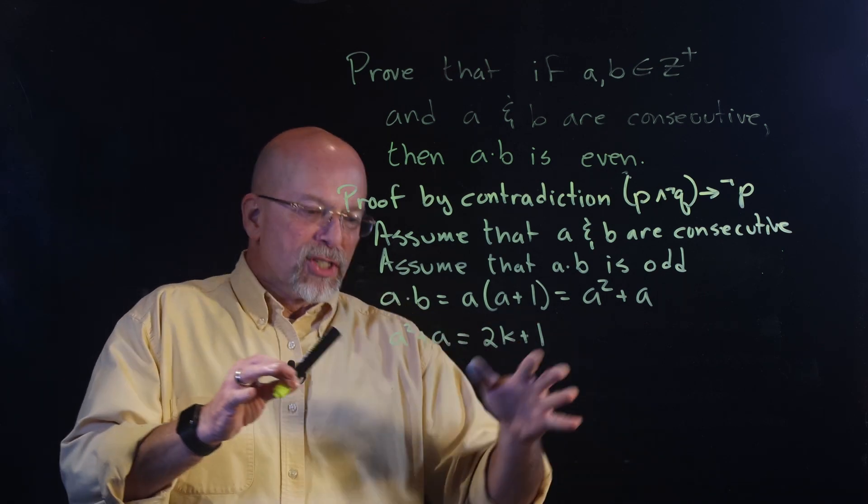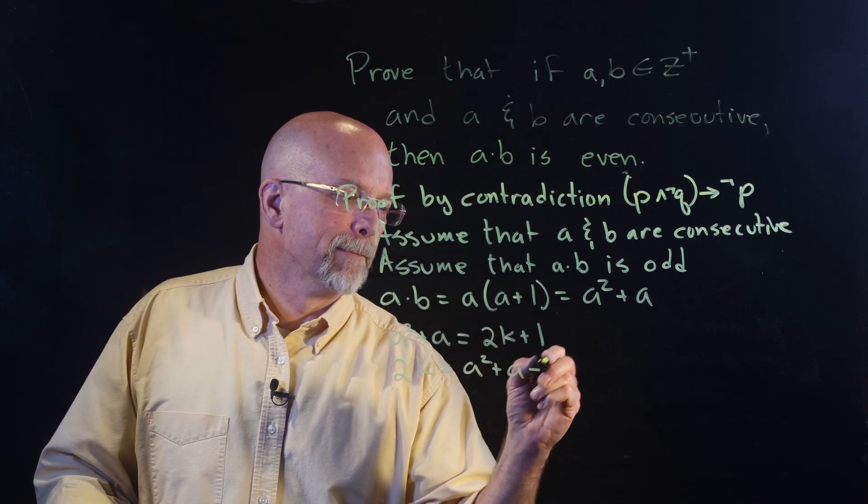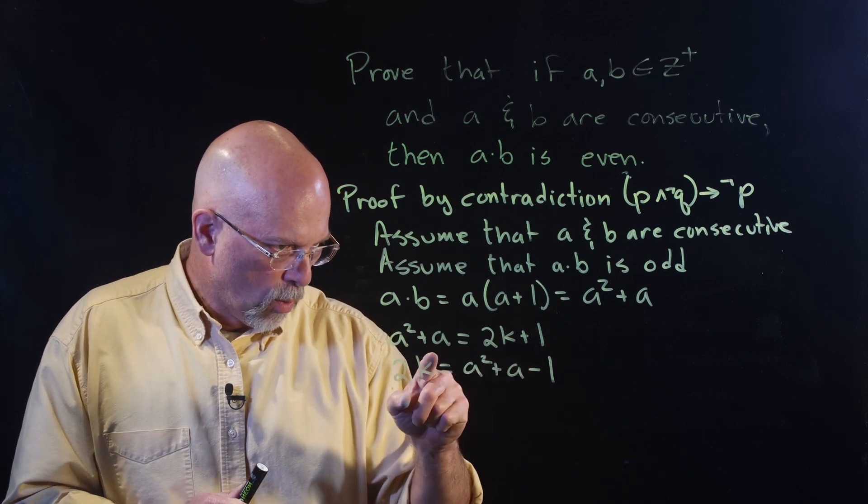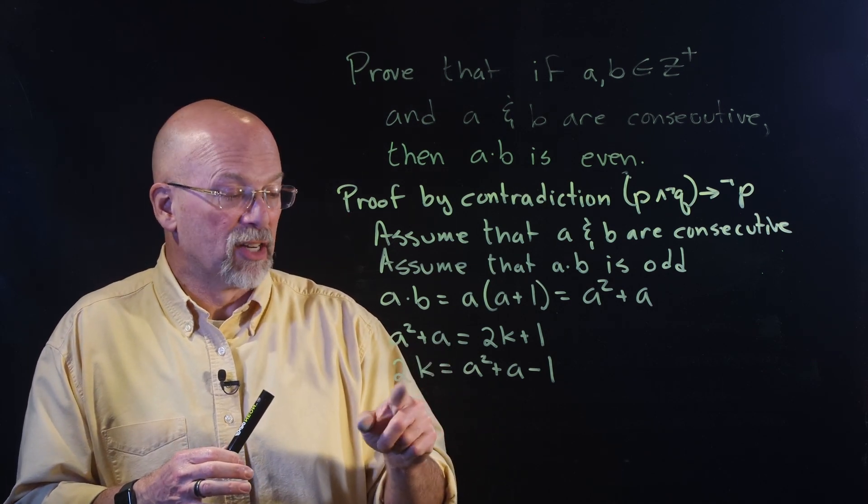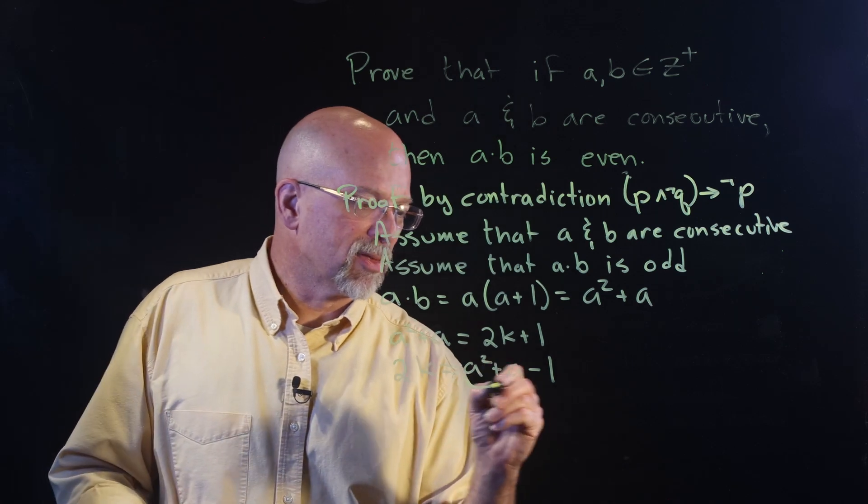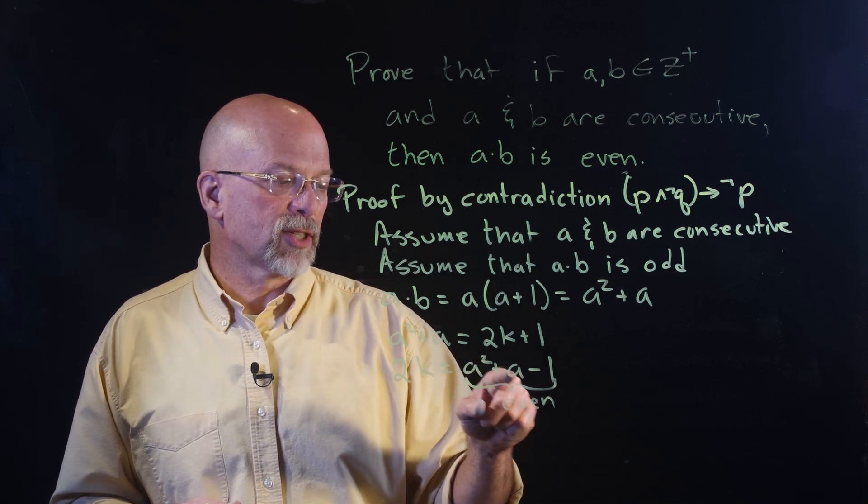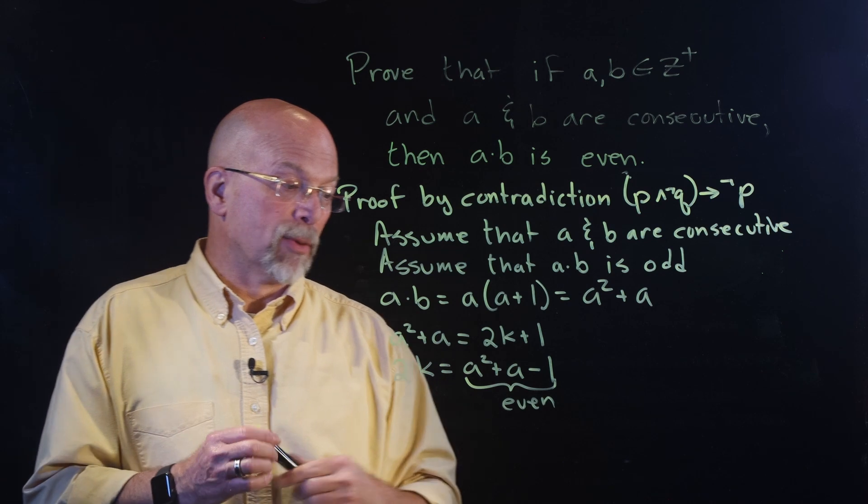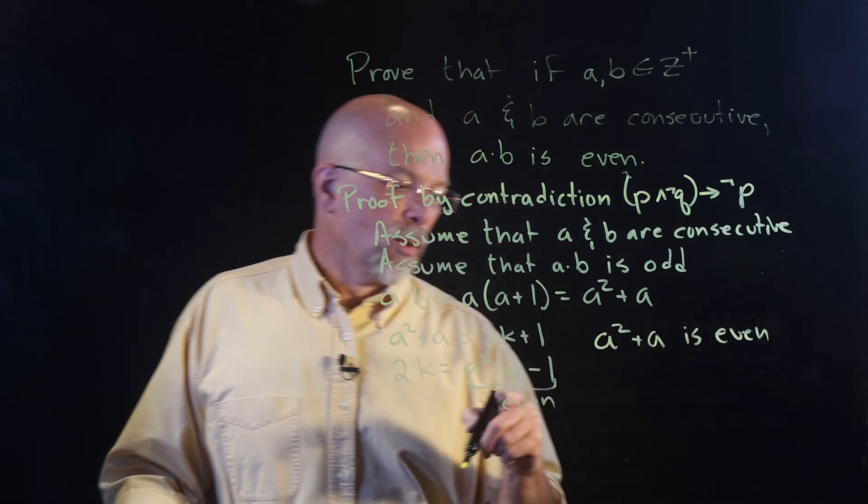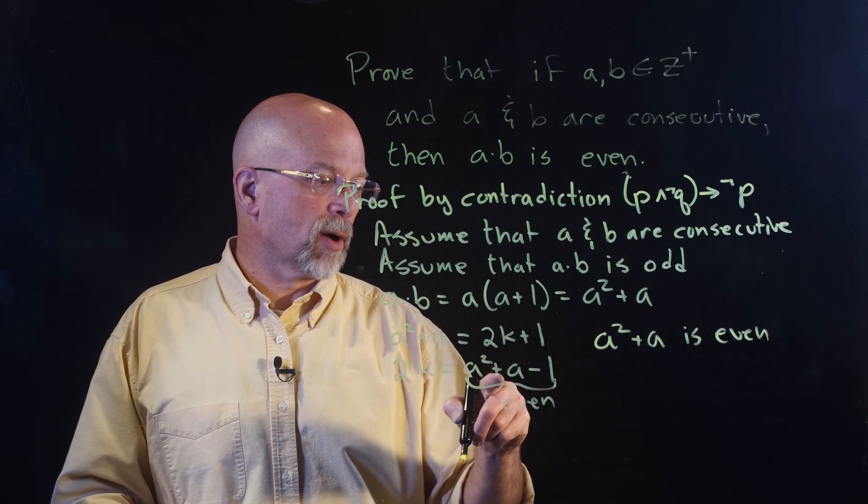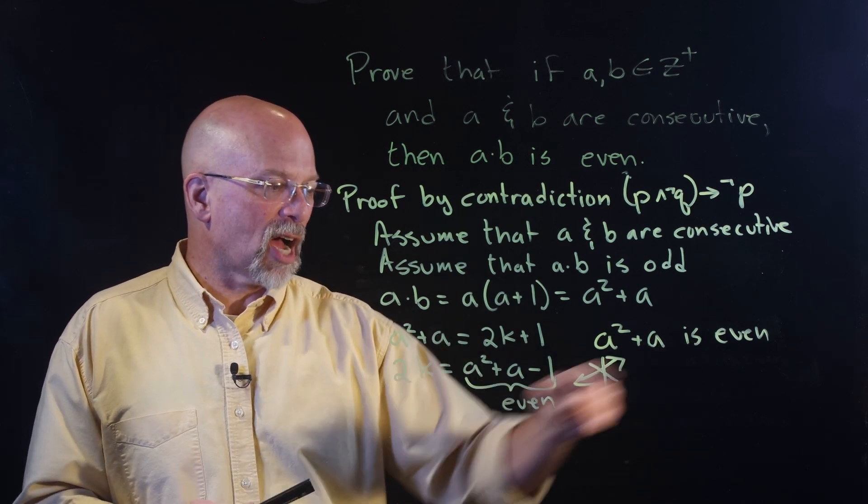Now, if we massage this around and show that 2k is equal to a squared plus a minus one. In other words, all we're doing is we're moving that one over to the other side of the expression. And we see that 2k must be, since k is an integer, 2k has got to be even, that means that this has to be even. Now, we already showed in the last proof that a squared plus a for both even numbers and odd numbers are even. So, we know that a squared plus a is even.